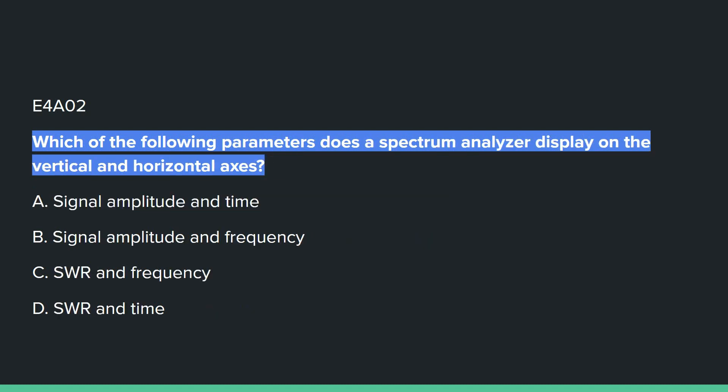E4A02: Which of the following parameters does a spectrum analyzer display on the vertical and horizontal axes? Answer B: signal amplitude and frequency.